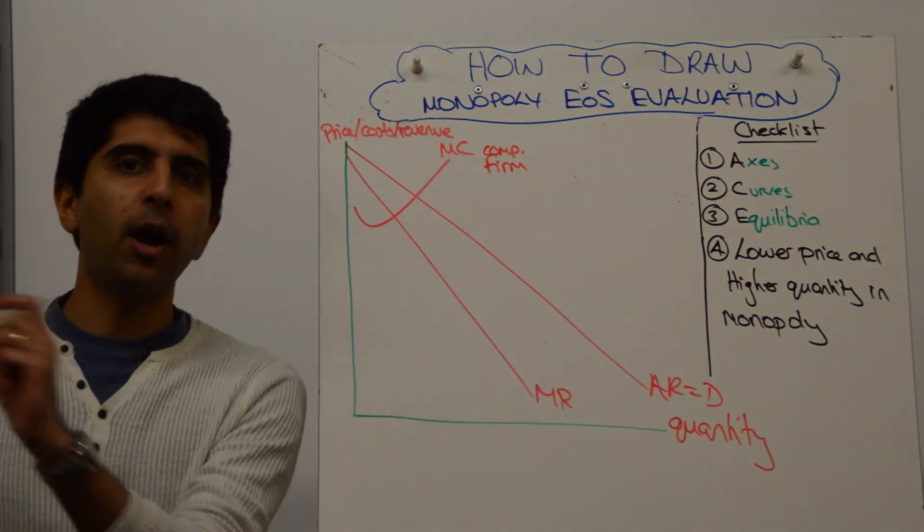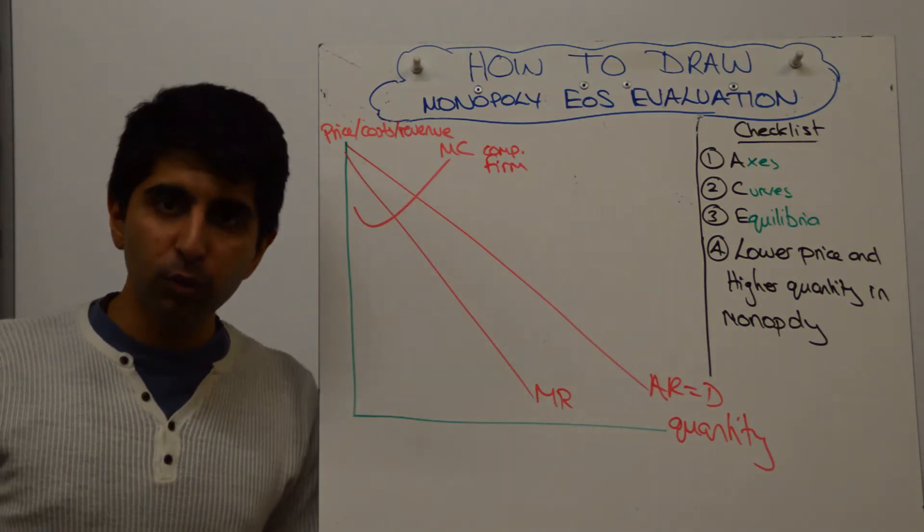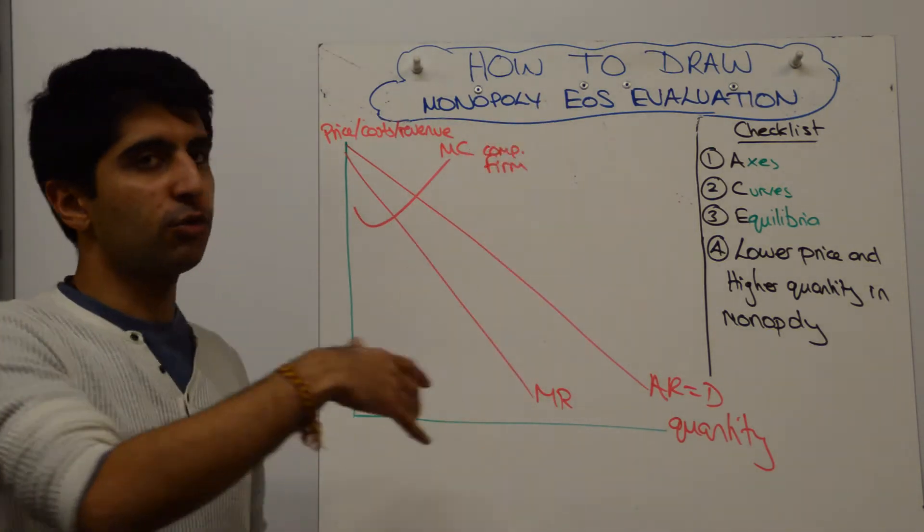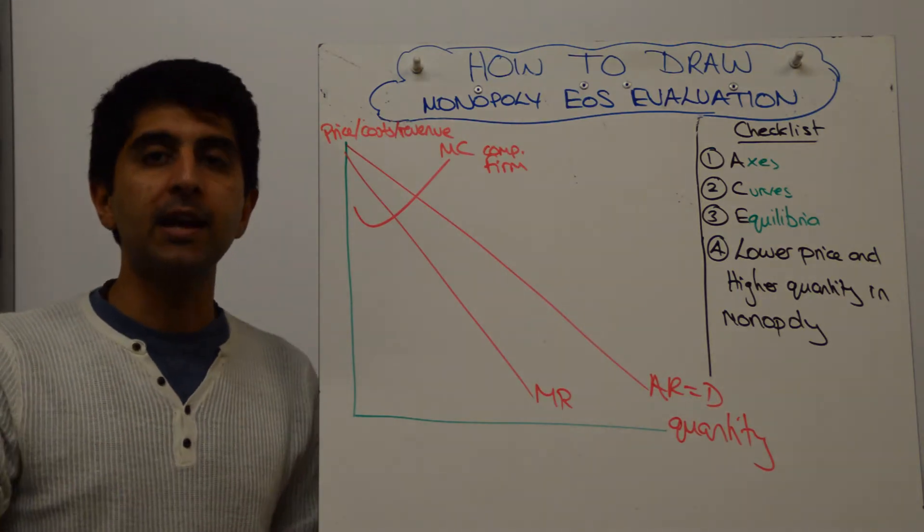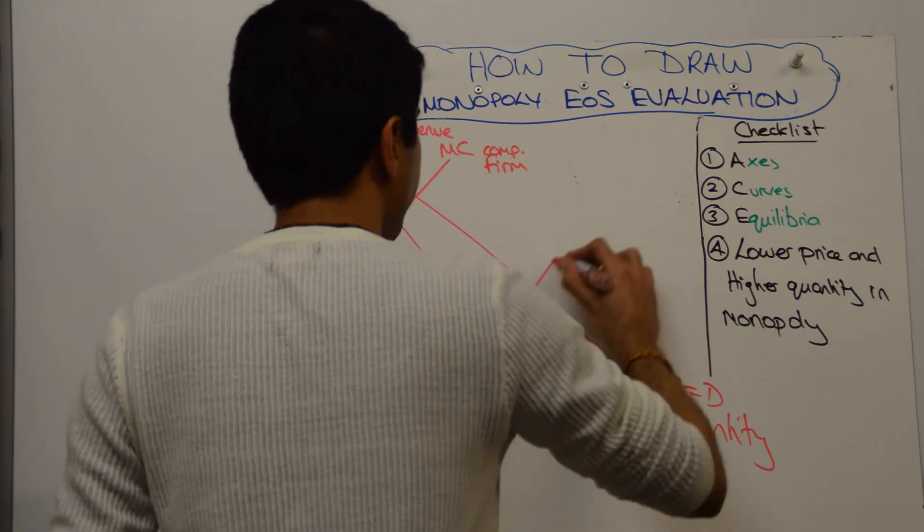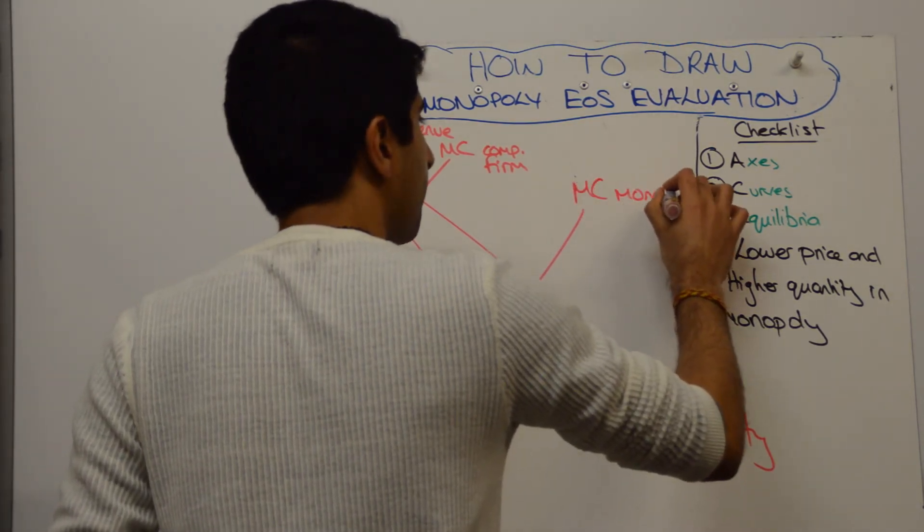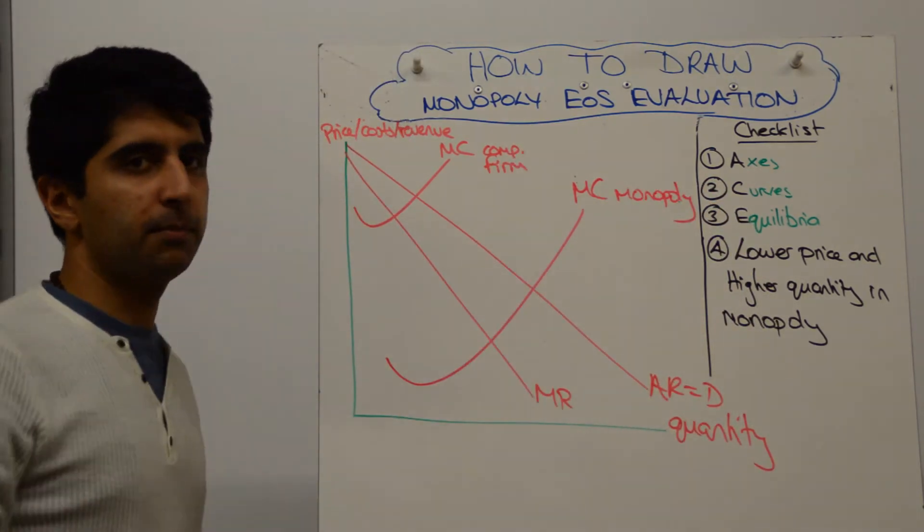Right, now we want to draw the marginal cost curve for a monopolist, which will be much lower, because their cost of production will be lower, assuming they have a much greater economy of scale that they're exploiting, compared to a competitive firm. And that means that a monopolist's MC might be over here. Much lower than for a competitive firm.